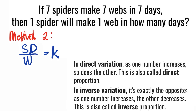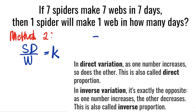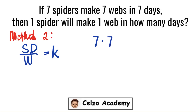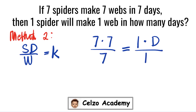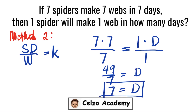Now let's set up the equation using the values of S, D, and W. For the first scenario: 7 spiders, 7 days, 7 webs. For the unknown: 1 spider, D days, 1 web. So: 7 times 7 divided by 7 equals 1 times D divided by 1. That gives us 49 divided by 7 equals D, so D equals 7. Algebraically, one spider will make one web in 7 days.